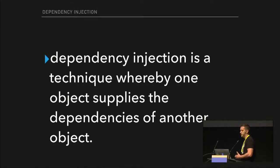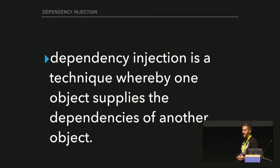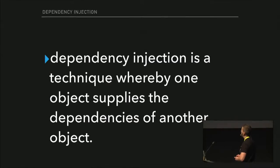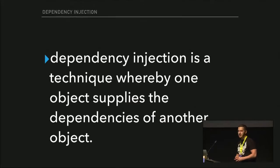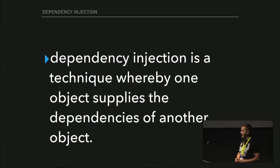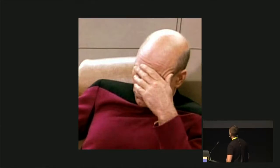My favorite part about any pattern, especially for those who read the Gang of Four, is their description. Because it makes a lot of sense to me each time I read it. Dependency injection is a technique whereby one object supplies the dependencies of another object. Imagine yourself a trainee or junior developer who reads the patterns and then tries to understand them. Will it help you a lot? Not really, I suppose.